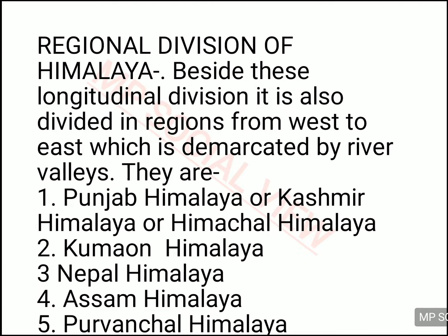We have seen the broad division of Himalaya into three parts: Himadri, Himachal, and Siwalik — Greater, Middle, and Outer Himalaya. Now, the Himalaya can be classified on another basis also, called the regional division of Himalaya. Since the Himalaya continues from northwest to southeast covering many states, on the basis of region, the Himalaya is divided into various parts. This division is mostly demarcated by rivers. The five categories of Himalaya in regional division are: Punjab Himalaya or Kashmir/Himachal Himalaya, Kumaon Himalaya, Nepal Himalaya, Assam Himalaya, and Purvanchal Himalaya.